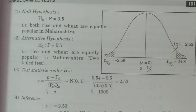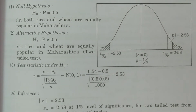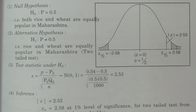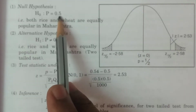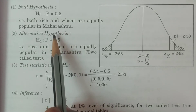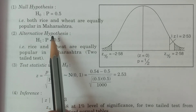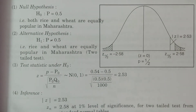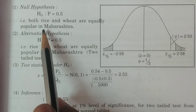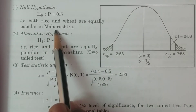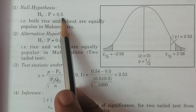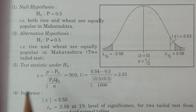Now we proceed with the test procedure: null hypothesis, alternative hypothesis, test statistic, comparison, and conclusion. The null hypothesis H-naught is P equal to 0.5. With the null attitude of no difference, both rice and wheat are equally popular in the state of Maharashtra.